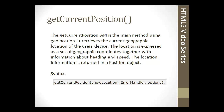Now we'll start looking at the geolocation code. The `getCurrentPosition` method is the main API method — if successful, it returns a position object. The latitude, longitude, and accuracy properties are always returned. The method takes three parameters: the show location callback, which is mandatory, and then an error handler and options, which are optional.